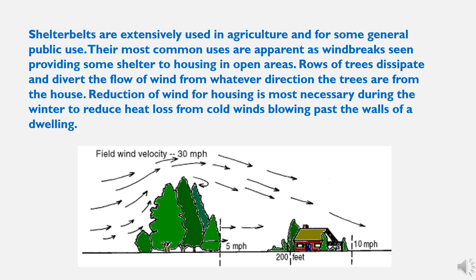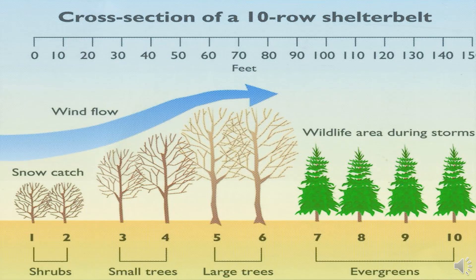In this picture, we can see the wind velocity is 30 miles per hour, and after the interference of shelter belts the speed goes down to 10 miles per hour. Further downwards, the speed is reduced to only 5 miles per hour. Because of this, there will be less damage to the crops and houses in the area affected by the shelter belts.